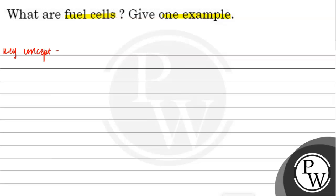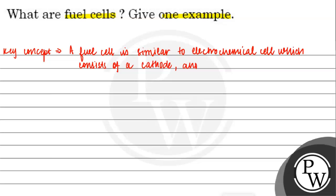Key concept of this question will be: A fuel cell is similar to an electrochemical cell which consists of a cathode, anode, and an electrolyte.